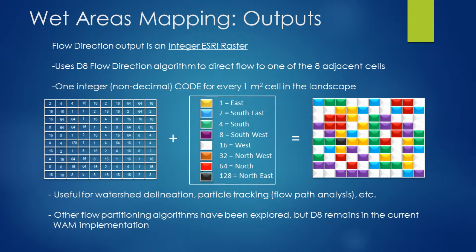Now just a bit more detail on each of these datasets. The flow direction raster is an integer raster in ESRI format. It defines flow in each of the eight cardinal directions adjacent to every single cell. We have a flow direction code in each of these one-meter cells that defines the direction of flow. The raster itself has a symbology that defines the cardinality and the flow directions based off of each of these codes.